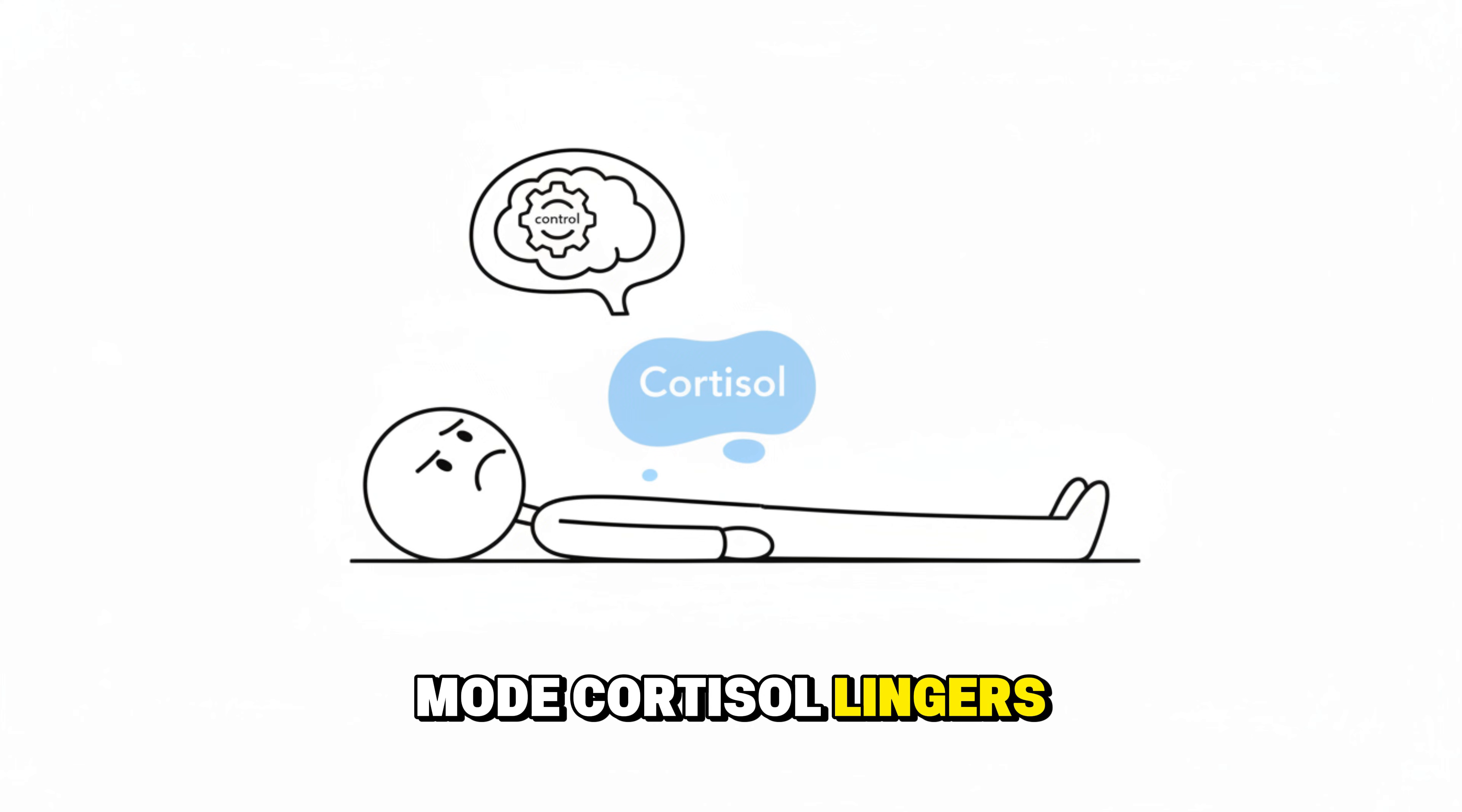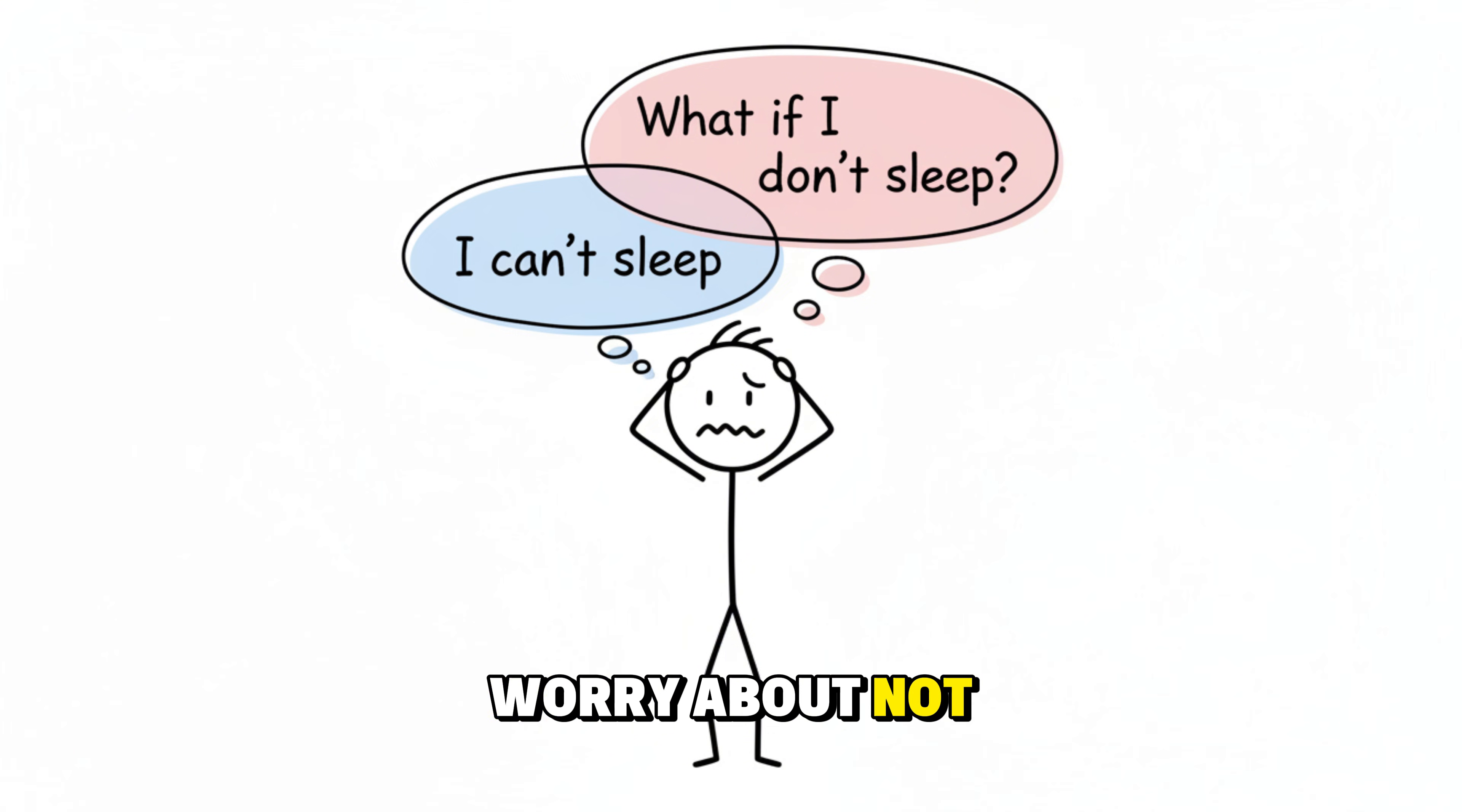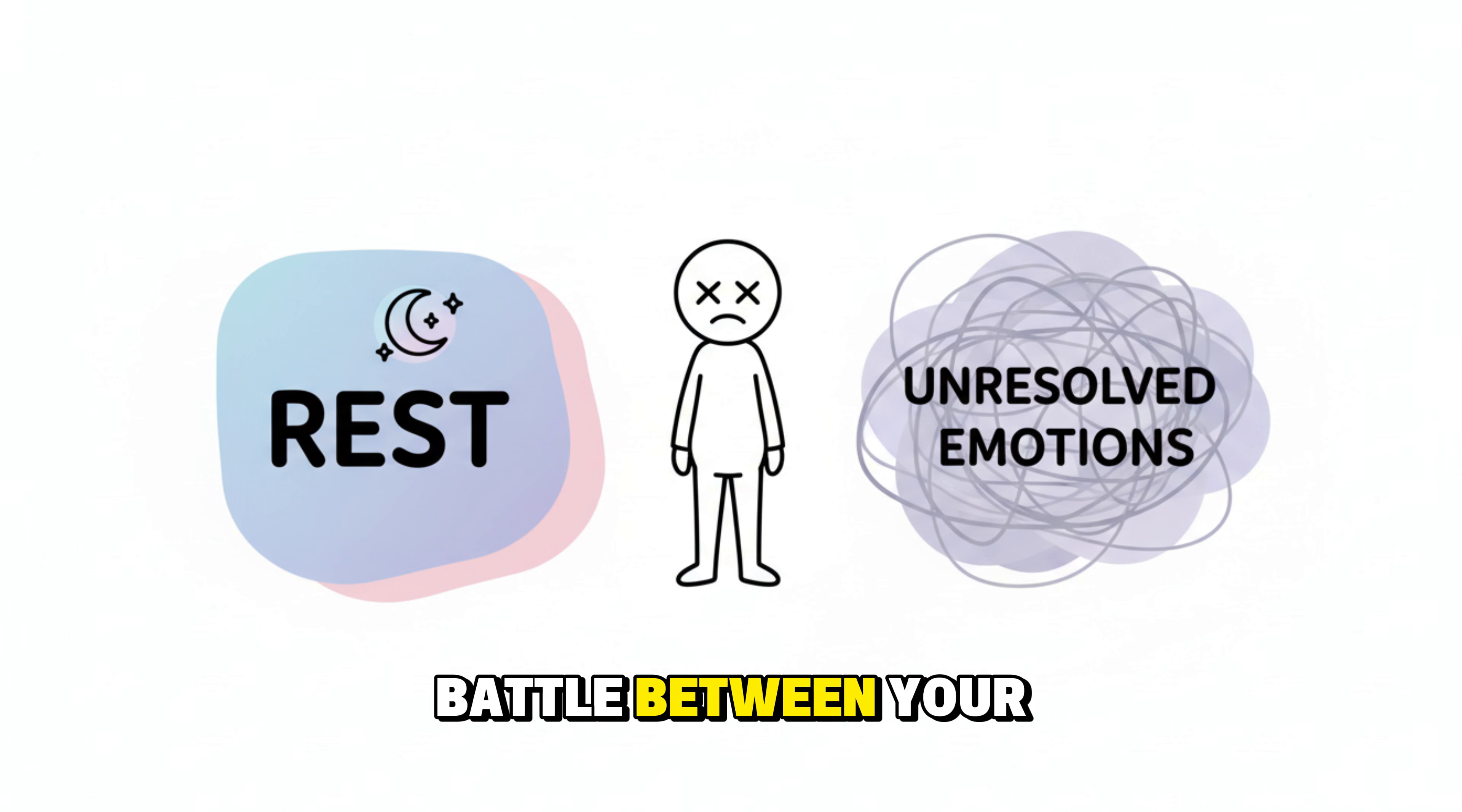Cortisol lingers, your body stays alert, and your brain refuses to release control. Psychology calls this the racing mind loop. The more you worry about not sleeping, the harder sleep becomes. It's a quiet battle between your desire to rest and your brain's need to resolve unfinished emotions.